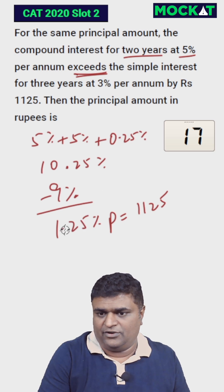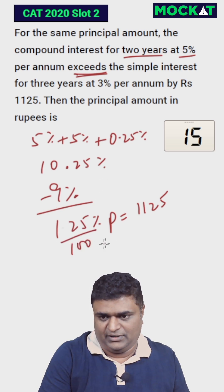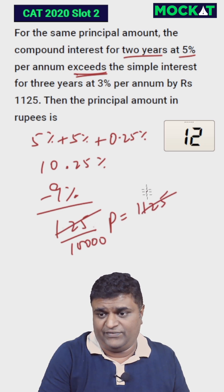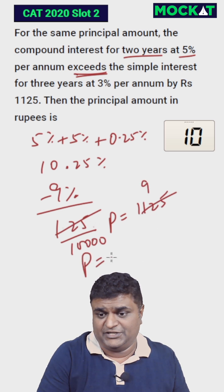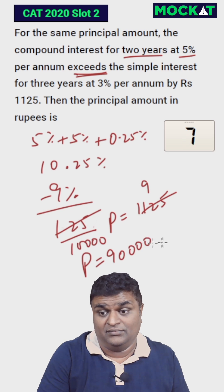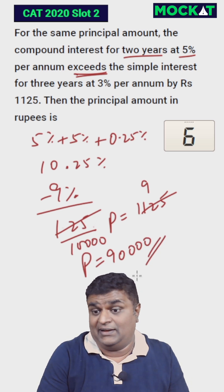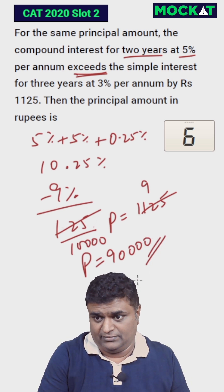Get rid of the decimal point, add two zeros on the bottom. The percentage symbol adds two more zeros. 125 divides into 12500 — you get 9. The principal is nothing but 9 followed by four zeros, which is 90,000. And that's the answer for this question.